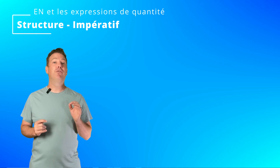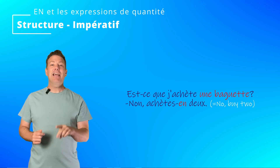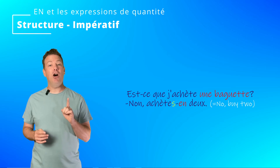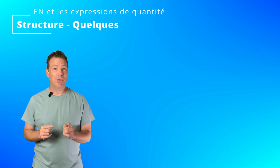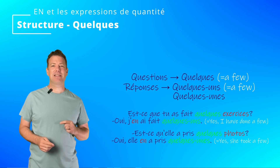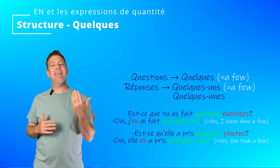In the imperative affirmative, EN comes directly after the verb, followed by the expression of quantity. Par exemple, est-ce que j'achète une baguette? Non, achète-en deux. Please note that, as we said in the last two videos, the S of the tu form in the imperative needs to be added for the liaison with EN to occur. When the EN pronoun reprises an expression introduced by quelques, the pronoun quelques-uns (masculine) or quelques-unes (feminine) is used. Par exemple, est-ce que tu as fait quelques exercices? Oui, j'en ai fait quelques-uns — exercices is masculine. Est-ce qu'elle a pris quelques photos? Oui, elle en a pris quelques-unes — photo is feminine.